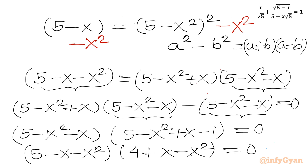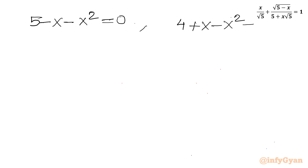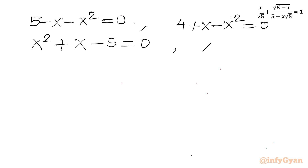So we have two quadratic equations to solve for real x. Setting each factor to zero and multiplying by minus 1: first equation is x squared plus x minus 5 equal to 0, and second equation is x squared minus x minus 4 equal to 0.